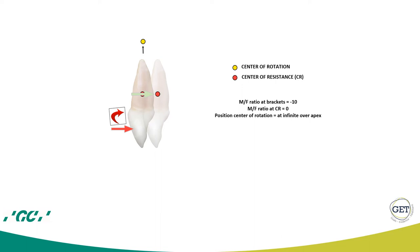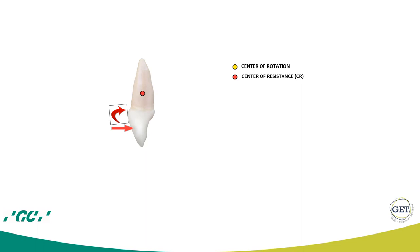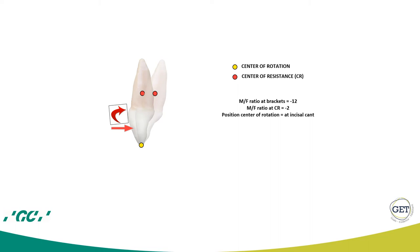Now imagine applying at the center of the crown a moment of minus 12 gram-millimeters — even larger than what the force generates relative to the center of resistance. At the bracket, the moment-to-force ratio will be minus 12. At the center of resistance, it will be minus 2, because the 10 gram-millimeter moment from the force minus 12 gives minus 2, and the force is still 1 gram. In this case, you will start to move the root, producing root torque, with the center of rotation at the incisal edge.